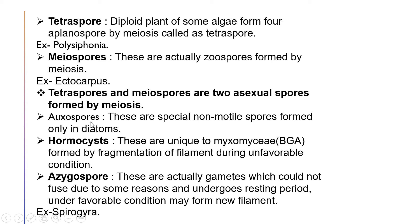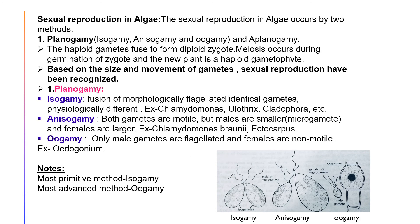Auxospores are special non-motile spores formed only in diatoms. Hormocysts are unique to Myxophyceae (blue-green algae), formed by fragmentation of the filament during unfavorable conditions. Aplanogametes are gametes which could not fuse due to some reason and undergo a resting period; under favorable conditions they may form a new filament, as seen in Spirogyra, where a zygospore is formed.